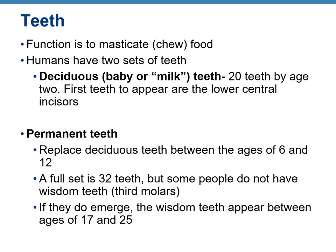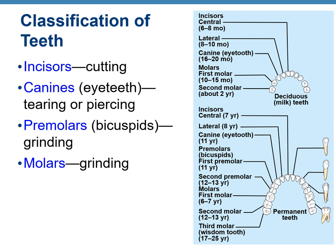There are four types of teeth in the permanent set: incisors for cutting, canines for piercing or tearing, premolars or bicuspids for grinding, and molars also for grinding. The dental formula is written as 2-1-2-3, meaning two incisors, one canine, two premolars, and three molars on one side of either jaw, and the same on the other side. Adding these and multiplying by four gives 32 teeth total.